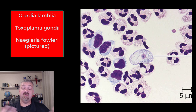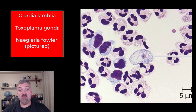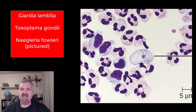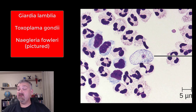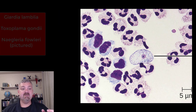And then we have Naegleria fowleri — hard to say — which is the brain-eating amoeba. Only slightly more than 100 Americans have ever been infected with it, even though it's actually in lots of places. But it kills almost everyone. I believe there have only been three Americans infected with the brain-eating amoeba who have survived. So those are the protozoa.